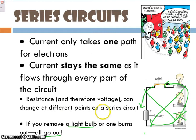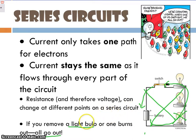Resistance can change at different points on a series circuit, because your light bulbs can have different resistances — they don't all have to be the same. Current stays the same, but resistance can change in a series circuit.